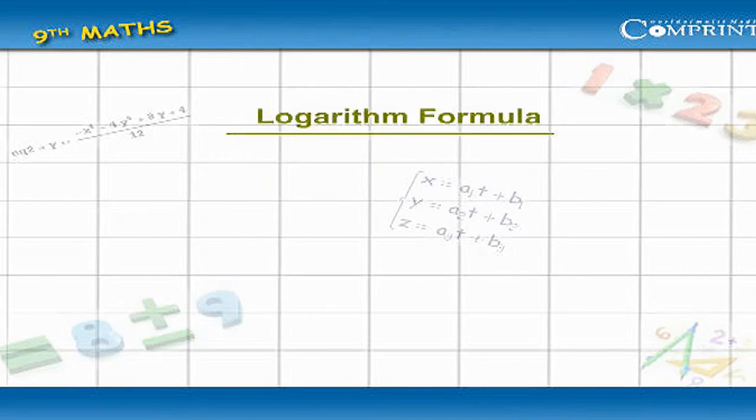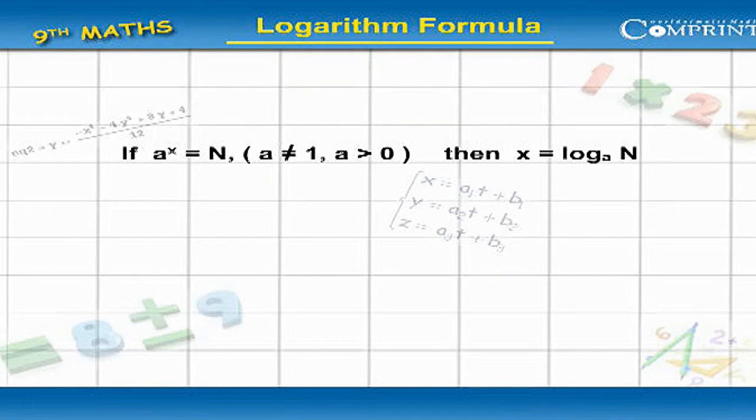Logarithm formulas. If a to the power of x equals n, where a is not equal to 1 and a is greater than 0, then x equals log n base a. Also, a to the power of log n base a equals n.